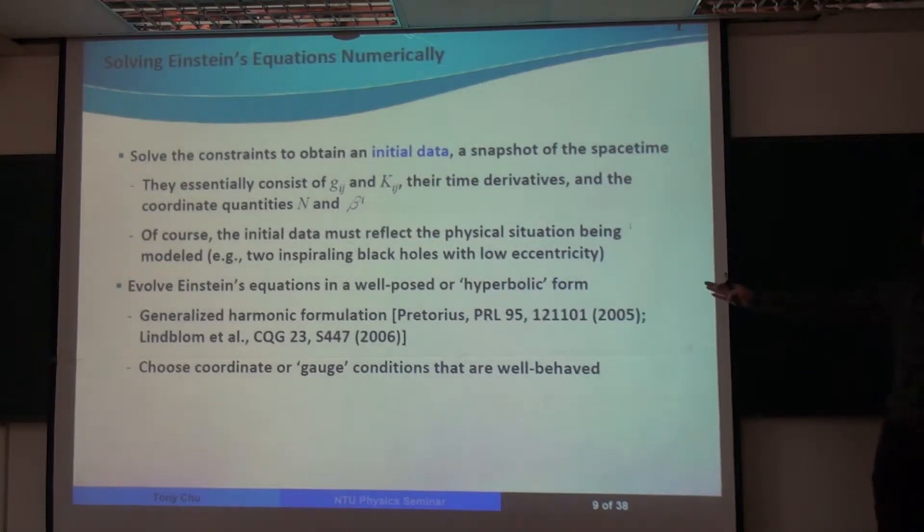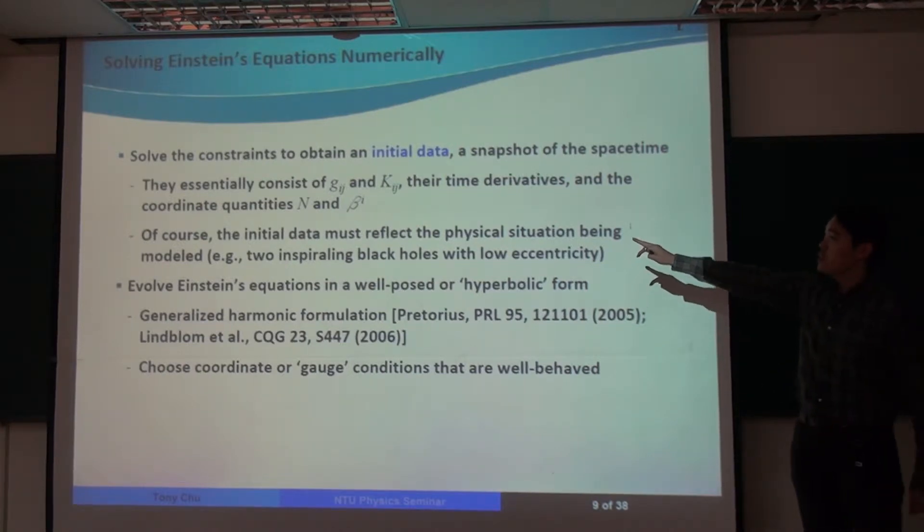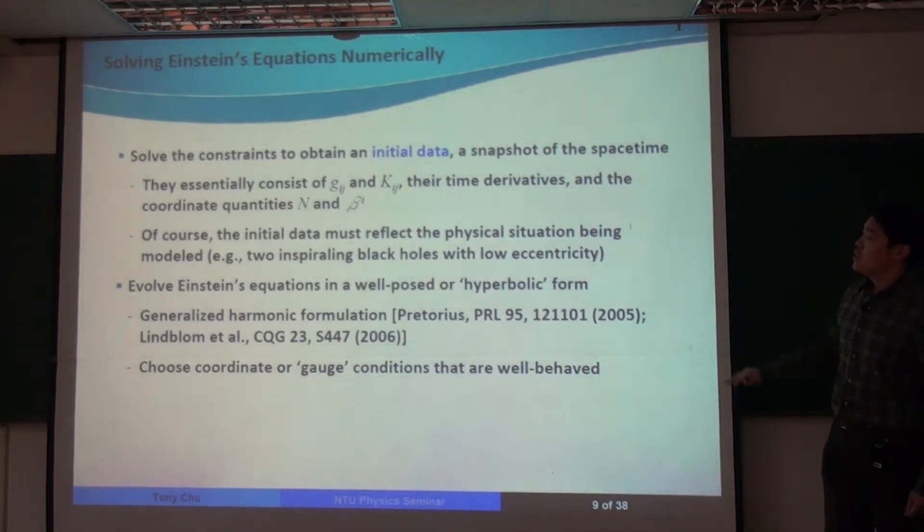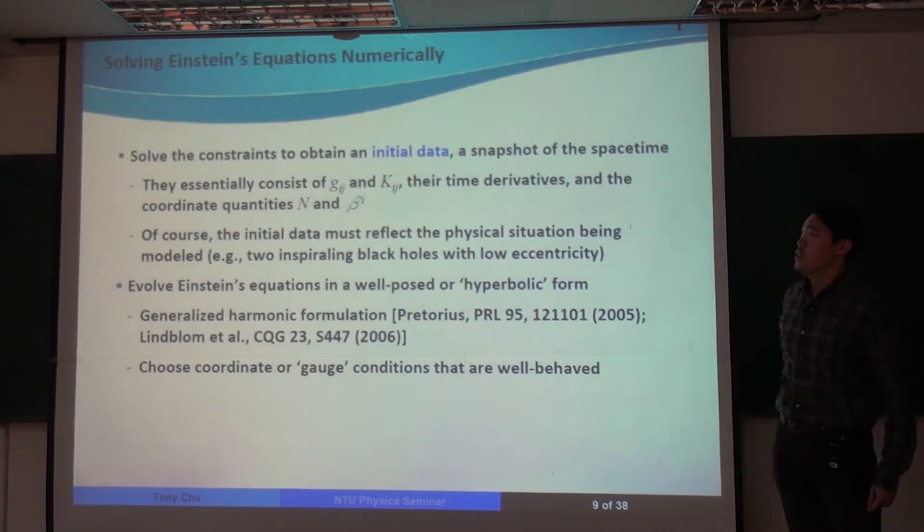But here are the basic steps that go into a numerical relativity simulation. We solve the constraints to obtain what's called initial data. That is, an initial snapshot of spacetime on a spatial hypersurface. And these consist of essentially the spatial metric, extrinsic curvature, and the time derivatives, and the coordinate quantities lapse and shift.